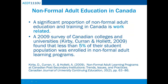A significant proportion of non-formal adult education and training in Canada is work-related. Employers are both major providers of training and major sources of funding and support for non-formal adult education in Canada. A 2009 survey of Canadian colleges and universities found that less than 5% of their student population was enrolled in non-formal adult learning programs. At universities, the top two non-formal program types were professional development and business leadership, and the types most commonly offered by colleges were contract training and workplace training.